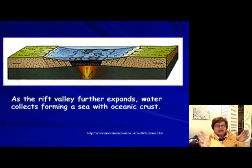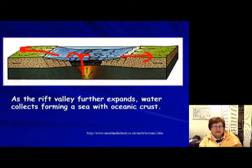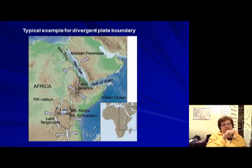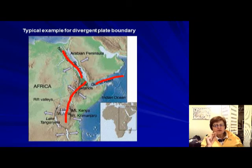When the rift valley gets bigger, seawater comes in, forming a wider basin with volcanoes around it. Magma comes up in the center while both sides move outward, creating volcanoes all around that area. A great example of this process is the Red Sea, Gulf of Aden, and the East African Rift Basin — a typical so-called triple junction, where magma is coming up from underneath.